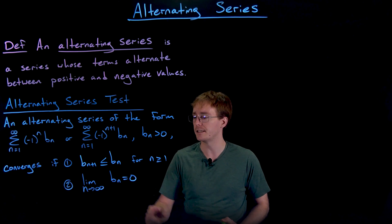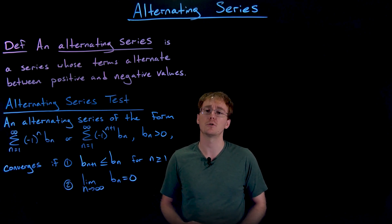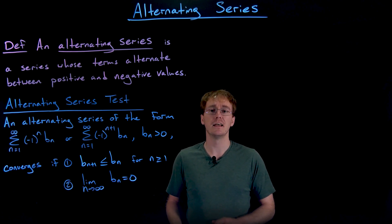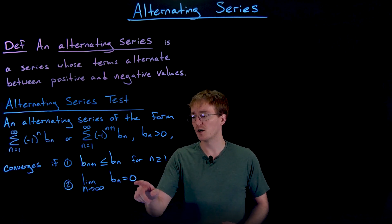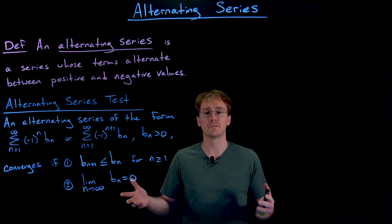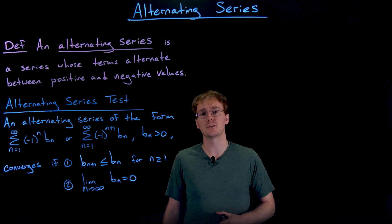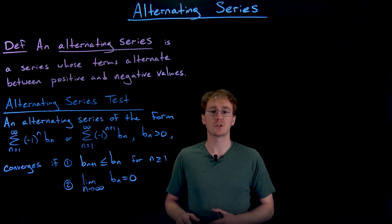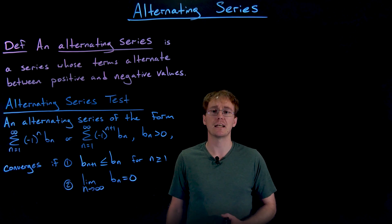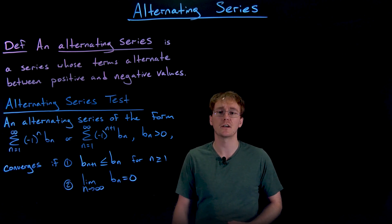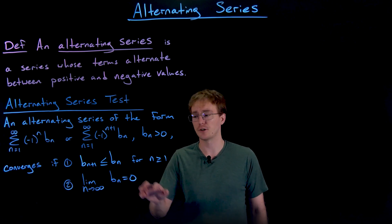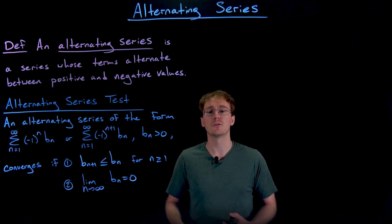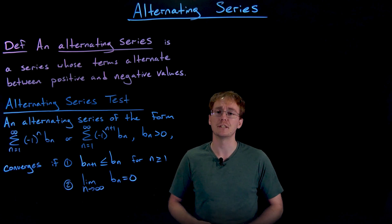The divergence test told us that if the terms approach anything other than zero, we can't converge — but it did not say that terms going to zero is enough to guarantee convergence. For a normal non-alternating series, terms going to zero does not mean convergence; just think of the harmonic series as an example. However, an alternating series whose terms are both decreasing and going to zero will definitely converge. The alternating harmonic series is the classic example of this.